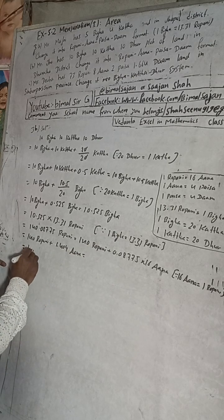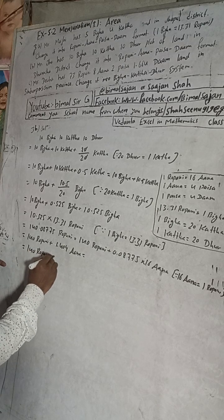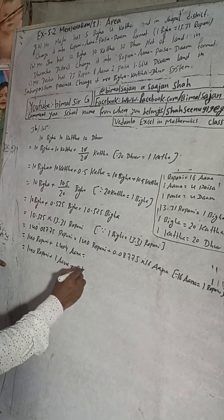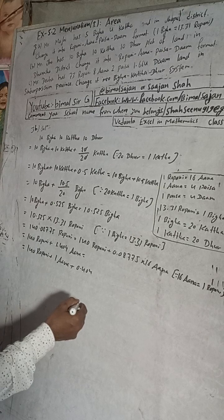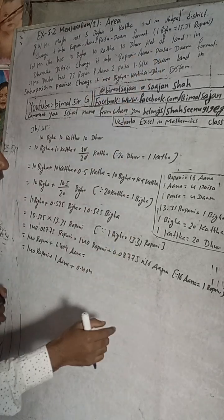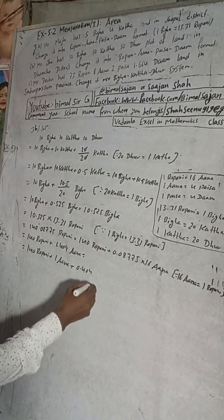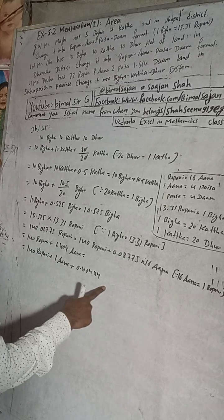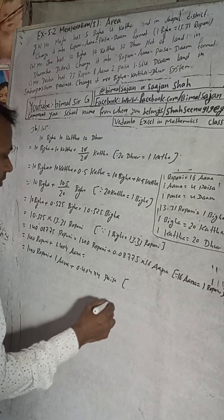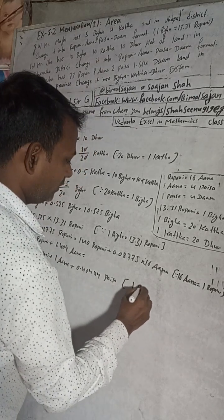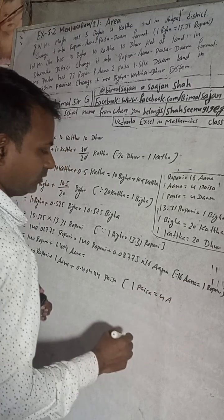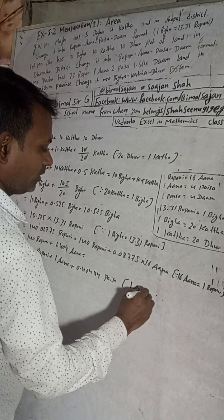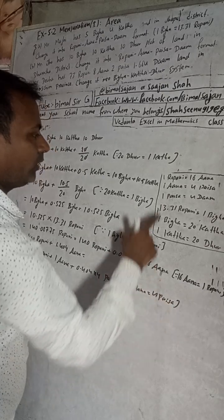From the 0.404 remaining after ana, we convert to paisa. 1 ana is equal to 4 paisa, so multiply 0.404 by 4. That gives 1.616. So we now have 140 ropani plus 1 ana plus 1 paisa, with 0.616 remaining.